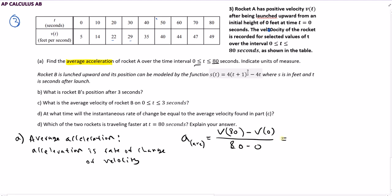That's going to give me the average rate of change of the acceleration. And all we got to do is find the values here. This is 49 minus 5 over 80 minus 0. So this is 44 over 80, which can simplify to 22 over 40, which is 11 over 20.